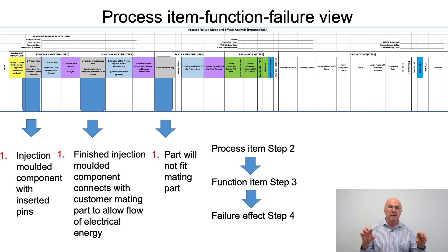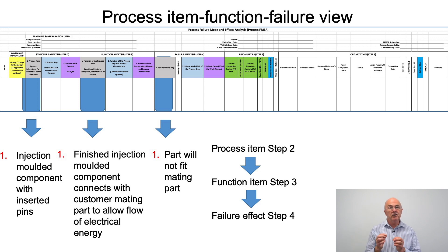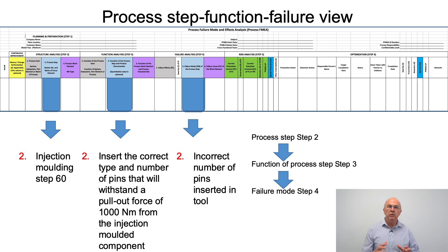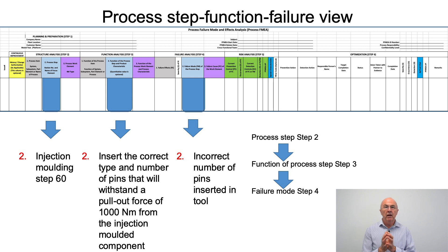Looking at how these line up: what are we trying to produce? We're trying to produce an injection-molded component with inserted pins. What does this need to do? This component needs to connect with the customer mating part to allow the flow of electrical energy. And what could be a potential failure effect? The part will not fit the mating part. So the boxes numbered one filled in at steps two, three and four should show good alignment.